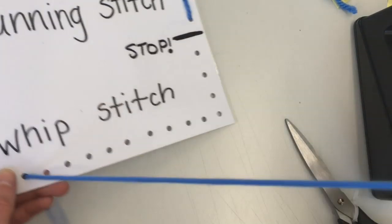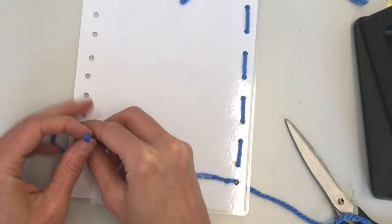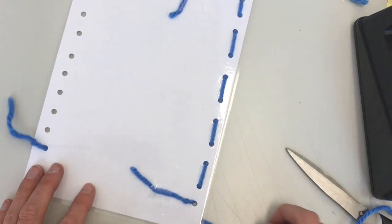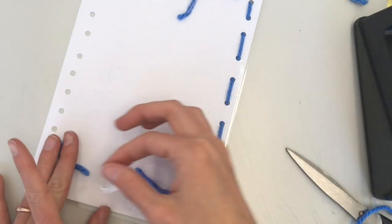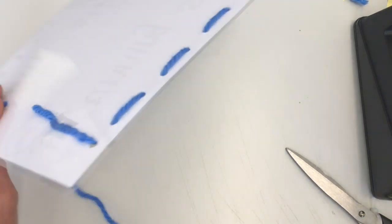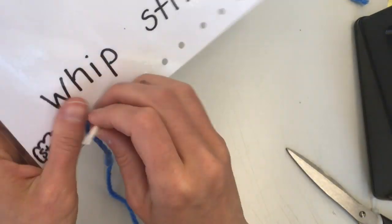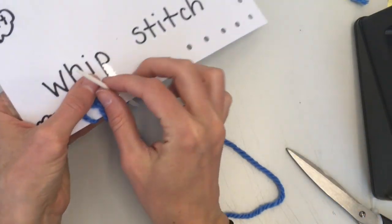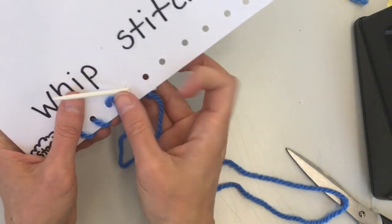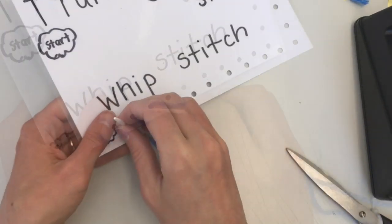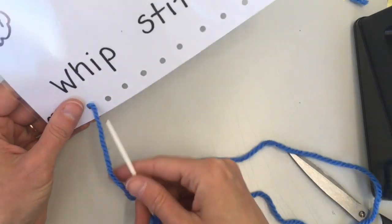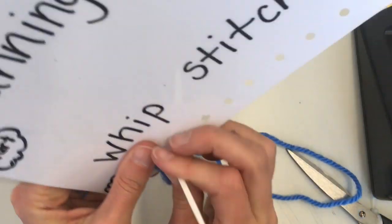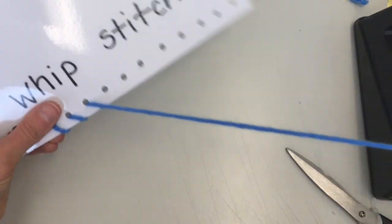So start by putting the needle through the hole towards you. You're going to need to tie a knot again, and you can tape that knot to the page just to secure it. And instead of going away from you, you're going to keep pulling the needle towards you. Let's watch from the beginning again as the yarn just wraps around the edge of the page.